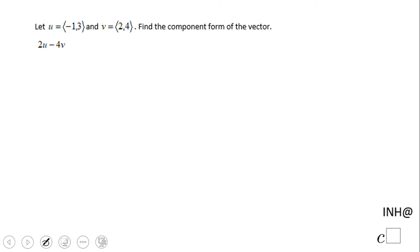Welcome or welcome back to I Need Help at C Squared. In this example we're going to calculate 2u minus 4v, where u is the vector <-1, 3> and v is the vector <2, 4>.